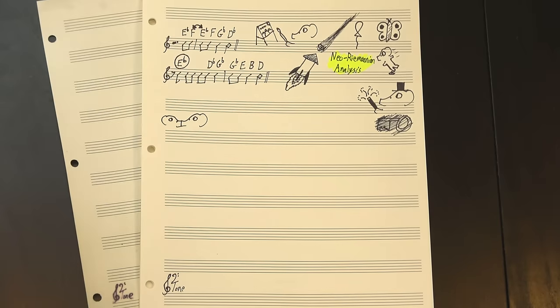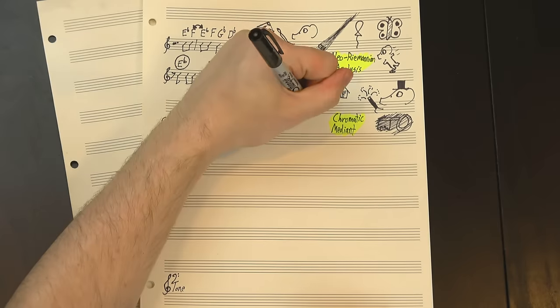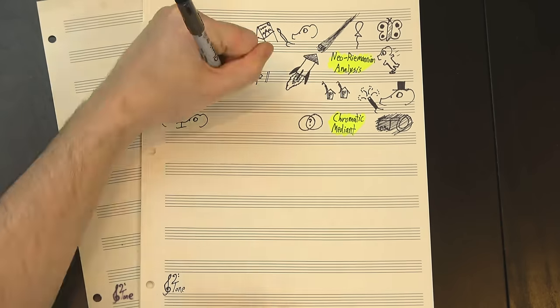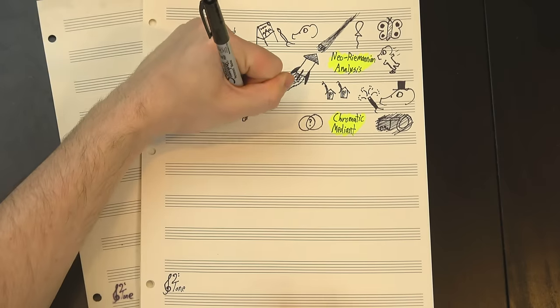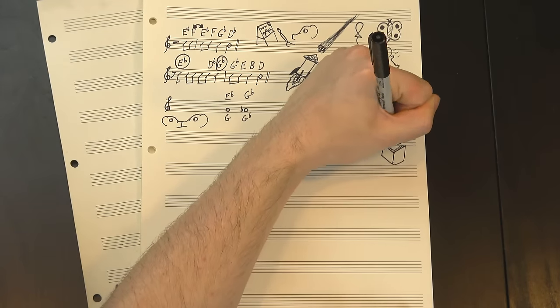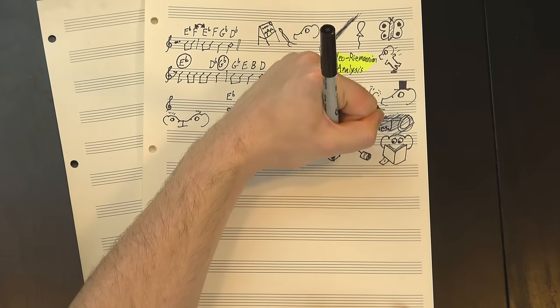For example, if we take E-flat major and G-flat major, we have what's called a chromatic mediant, where two chords are a third apart but don't share as many notes as we'd expect. The E-flat major uses a G-natural, whereas G-flat major obviously uses a G-flat. Neo-Riemannian theory tells us that the chromatic mediant relationship is a pretty close one, so this move feels fairly well connected.